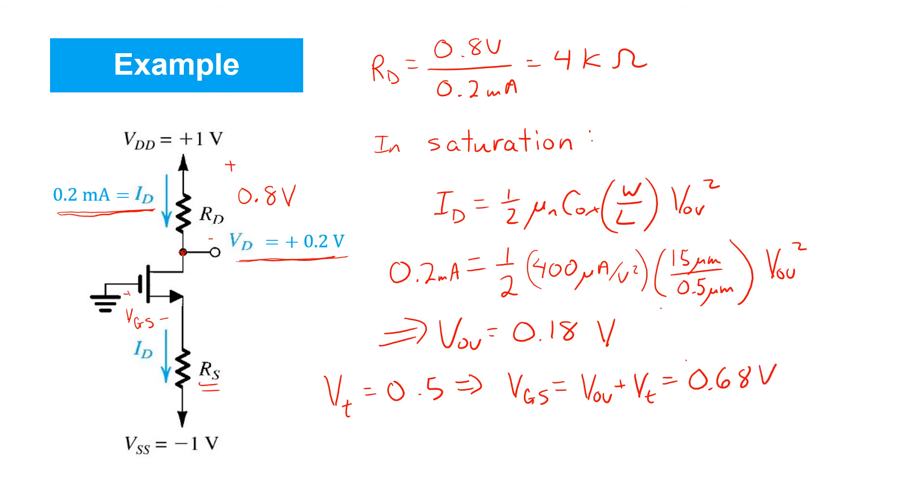Knowing that, we've now established the source voltage. It's 0.68 volts below ground. From here, we know that the voltage across RS must be 0.32 volts.